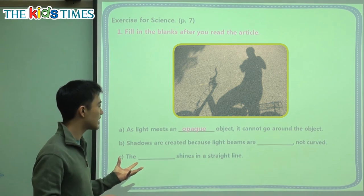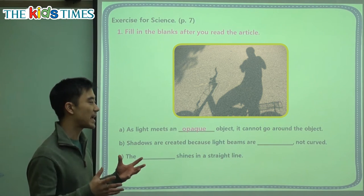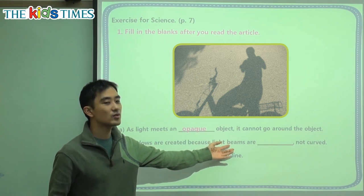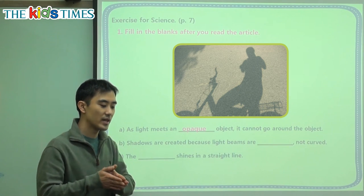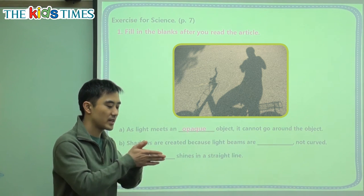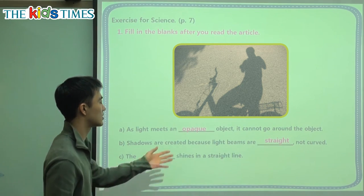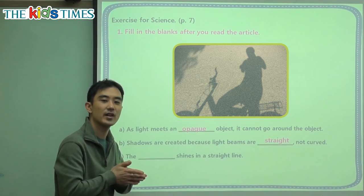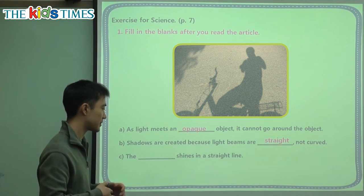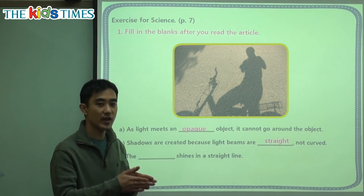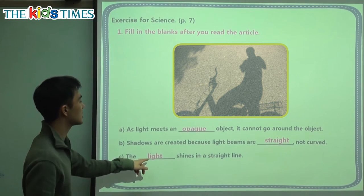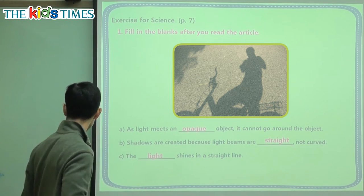B: Shadows are created because light beams are blank, not curved. How do these light beams move? Do they move in a curvy, wavy way? No — this is not curved. It goes in a straight line. They are straight, right? They do not turn, they do not curve. The blank shines in a straight line — what goes in a straight line? We talked about it. It is light. It goes in a straight line.